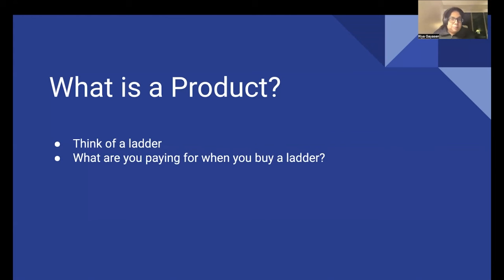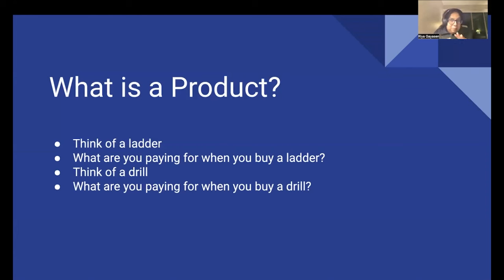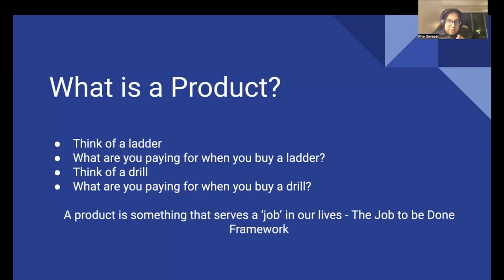This example is from the jobs-to-be-done framework, which defines any product as something that does some job for you. Similarly, think of a drill. When you pay for a drill, you're probably not paying for something made of steel and electronics. You're probably paying for a hole in your wall so that you can hang a TV or painting on the wall. A product is something that serves a job in our lives. I've defined this because an AI product actually needs to solve a problem — that context needs to be kept in mind throughout this presentation.